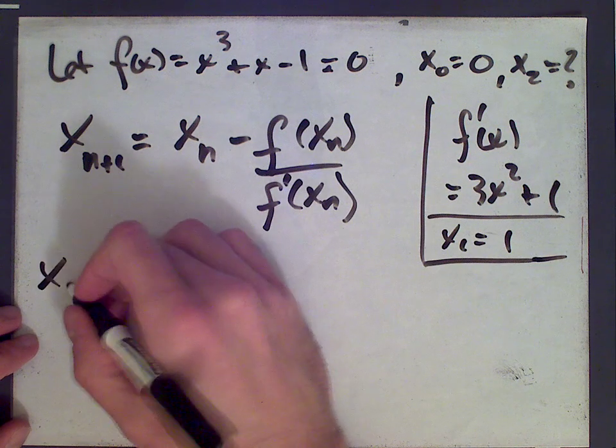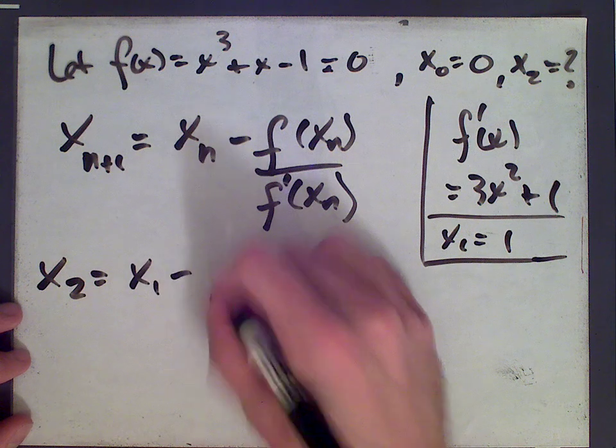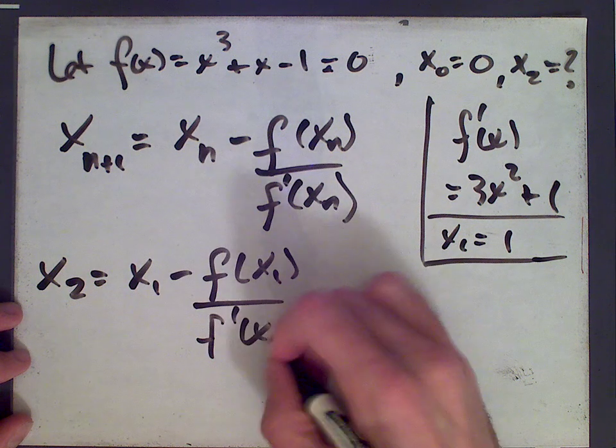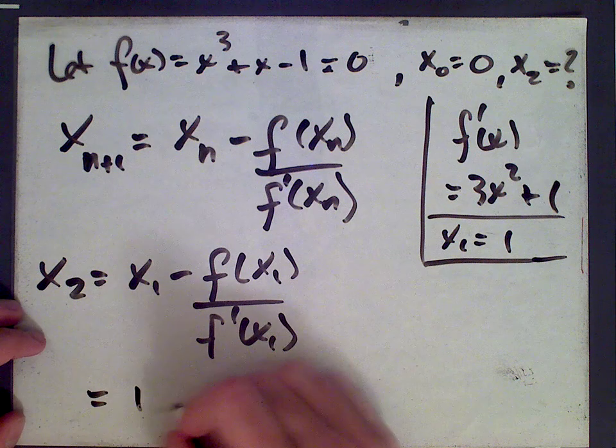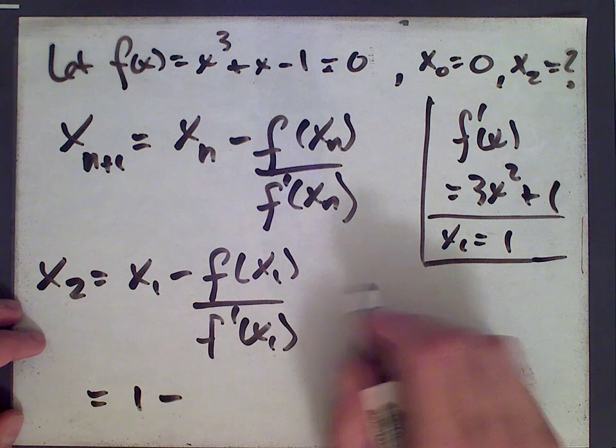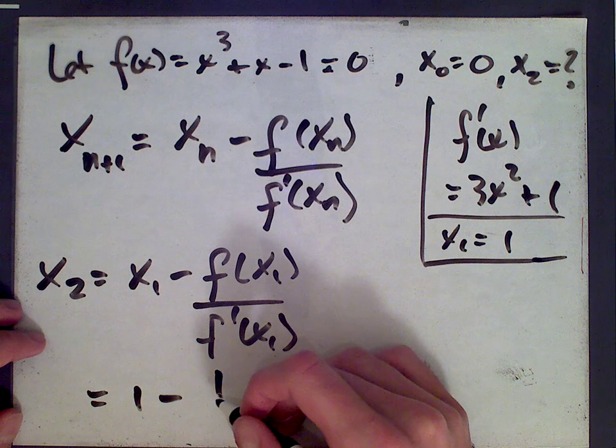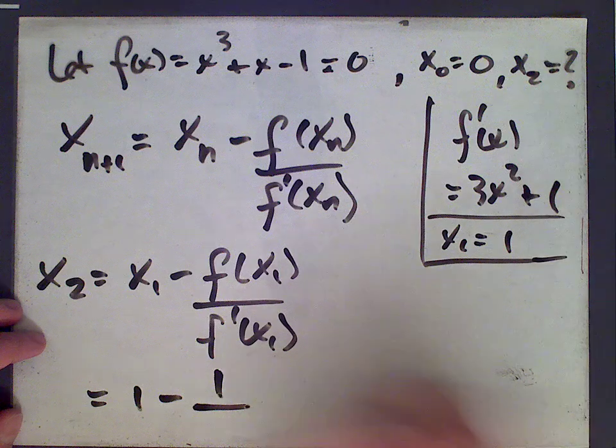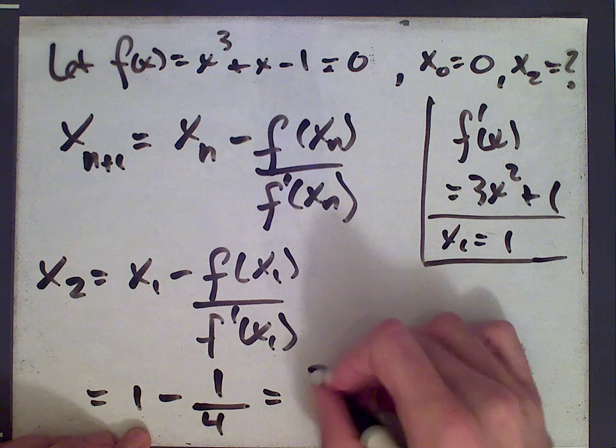So x two we get by plugging in n equals one. This will be x one, which is one, minus f of one, which is one plus one minus one, which is one, divided by f prime at one, which is three plus one is four. And so we get x two equals three quarters.